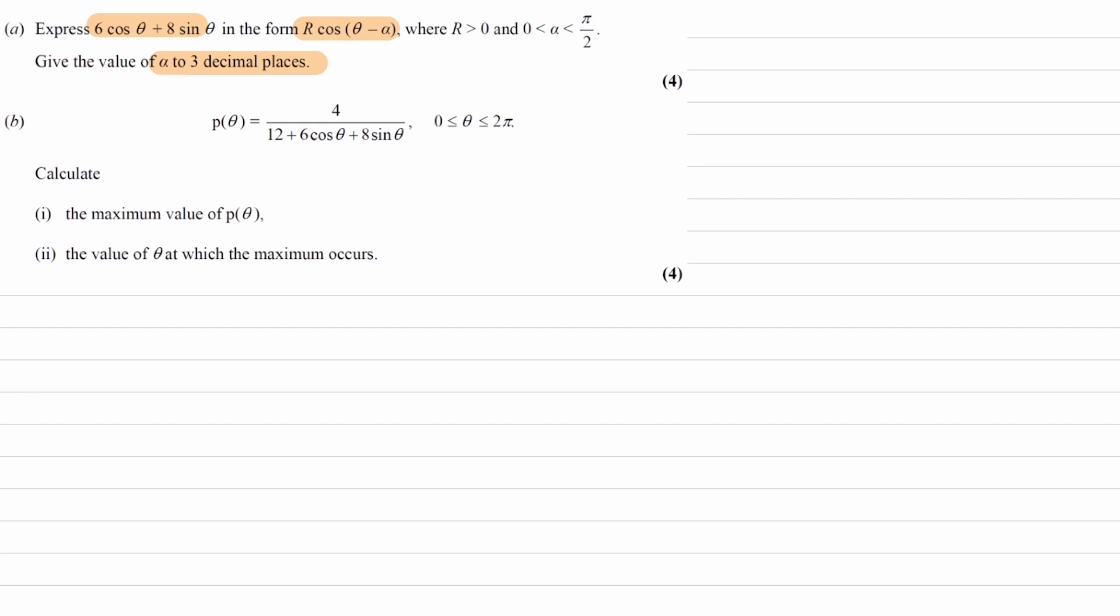First of all, expanding out the r cos theta minus alpha, this gives, using the addition formula, r cos theta cos alpha plus r sin theta sin alpha.